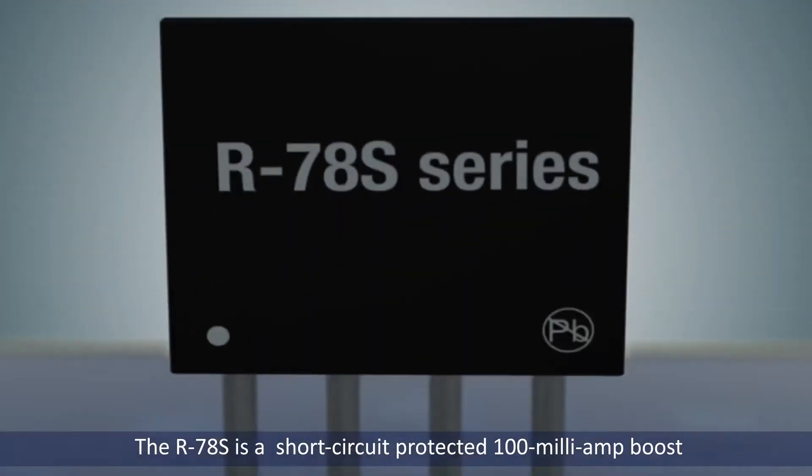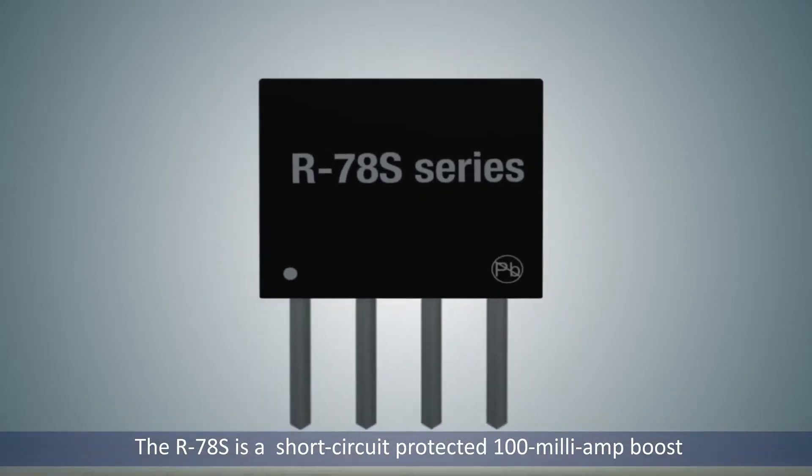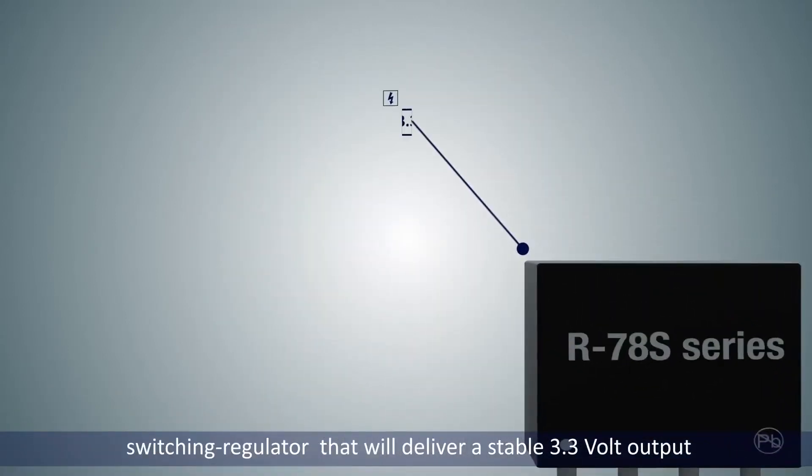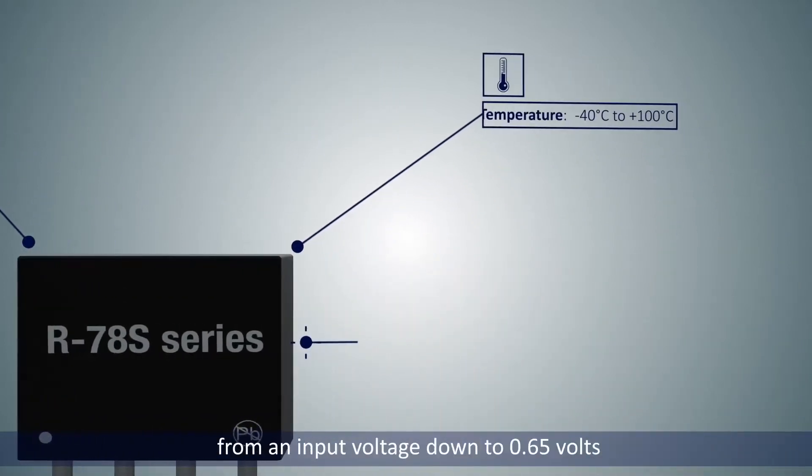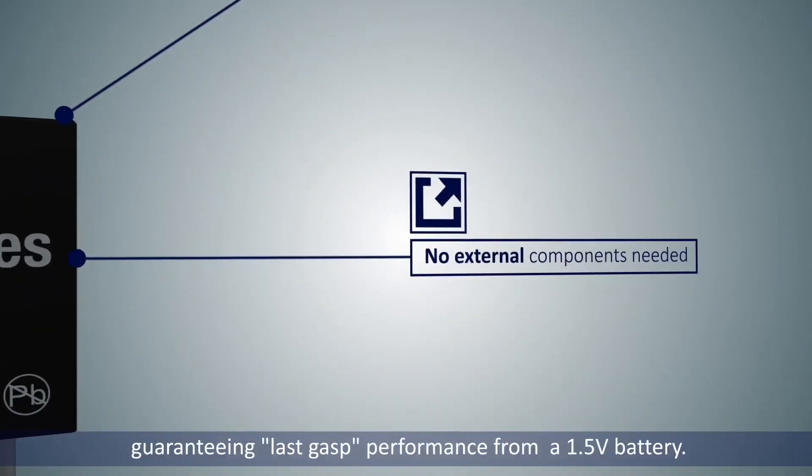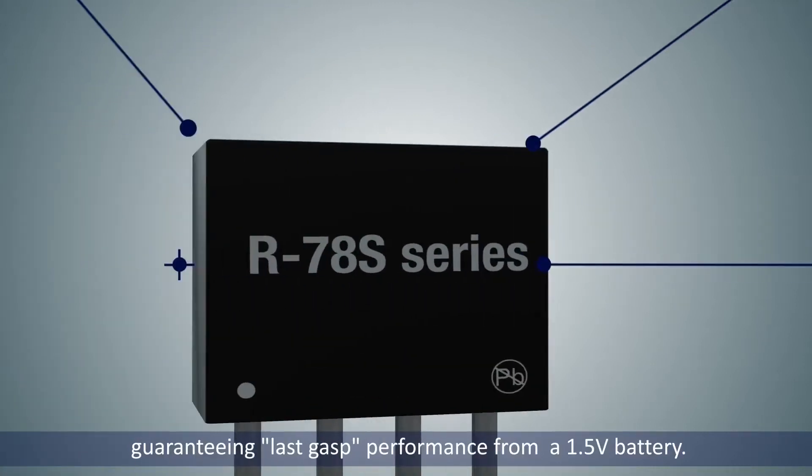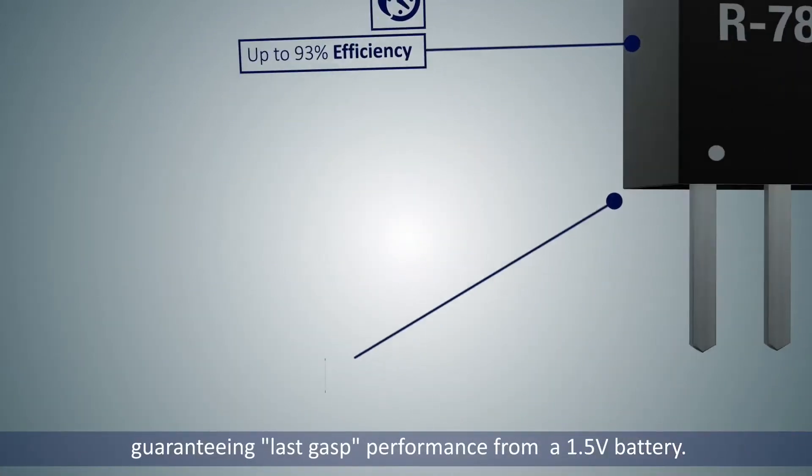The R78S is a short-circuit protected 100mA boost switching regulator that will deliver a stable 3.3V output from an input voltage down to 0.65V, guaranteeing last gasp performance from a 1.5V battery.